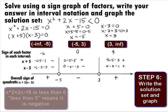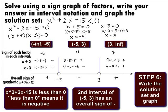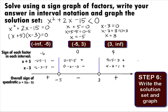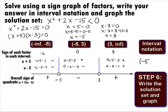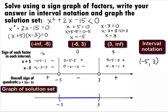In Step 6, we want to write the solution set in interval notation and graph it. Remember that the original inequality is x squared plus 2x minus 15 is less than 0. To be less than 0 means the quadratic has to be negative. Looking at the bottom line, there is one interval where the quadratic is negative: the second one, which is negative 5 to 3. Since we are not including the endpoints, this will be an open interval using curved ends. Our final answer in interval notation is the open interval from negative 5 to 3. The graph will have a curved end at negative 5 and a curved end at 3 with everything in between shaded.